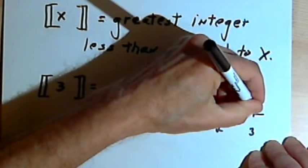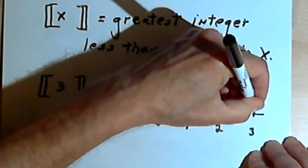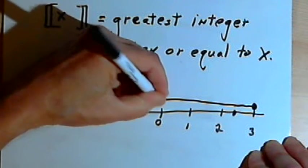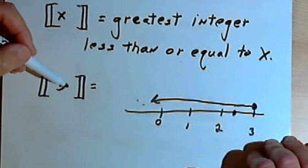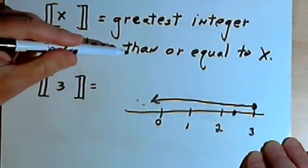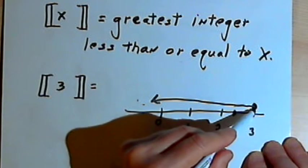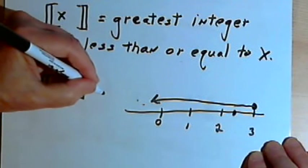So once again I look at my number line, I'll start at 3, draw an arrow to the left, and since I'm looking for the greatest integer less than or equal to 3, I'll just use that 3 that I already have.